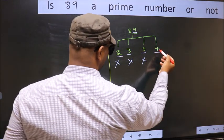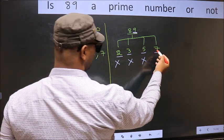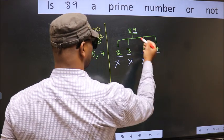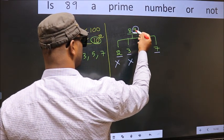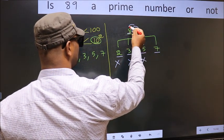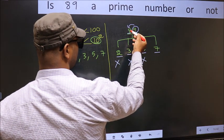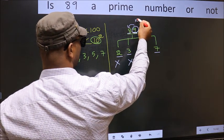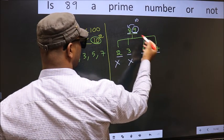Next number 7. To check divisibility by 7, we should double this and subtract from this number. So 9 into 2: 18 minus 8 is 10. 10 is not divisible by 7.